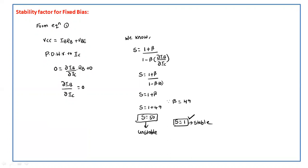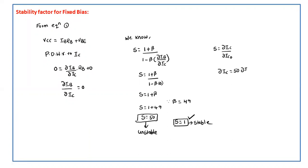Substituting into the stability factor formula, we get: ∂Ic = 50·∂Ico. This means Ic is 50 times the reverse saturation current due to temperature. In the fixed bias, the stability factor is very poor — the operating point is unstable. Instead of getting S = 1, we are getting S = 50. From this we can say that fixed bias cannot control the junction temperature.